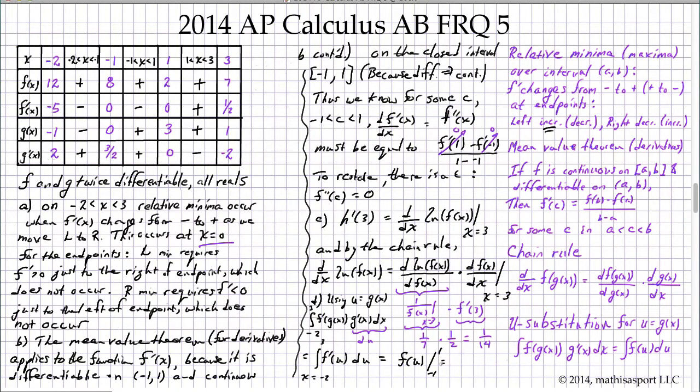And so we're evaluating that from... It's f of 1 minus f of negative 1. And that's going to be... What does that table give us? It is 2 minus 8. And that's negative 6.